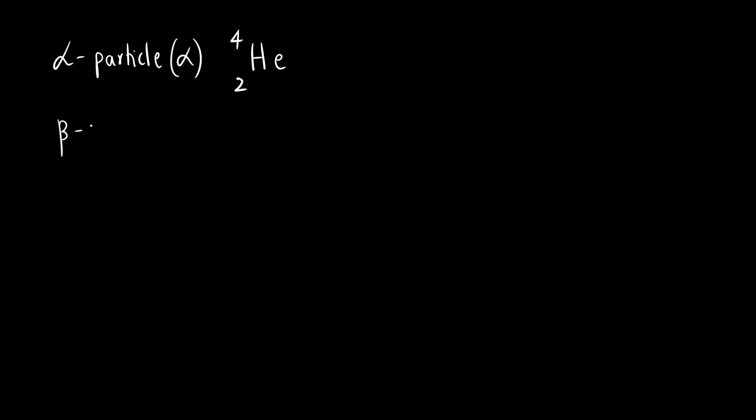Then what is beta particle? Beta particle is represented by symbol beta and it is nothing but electron with mass zero and charge minus 1.